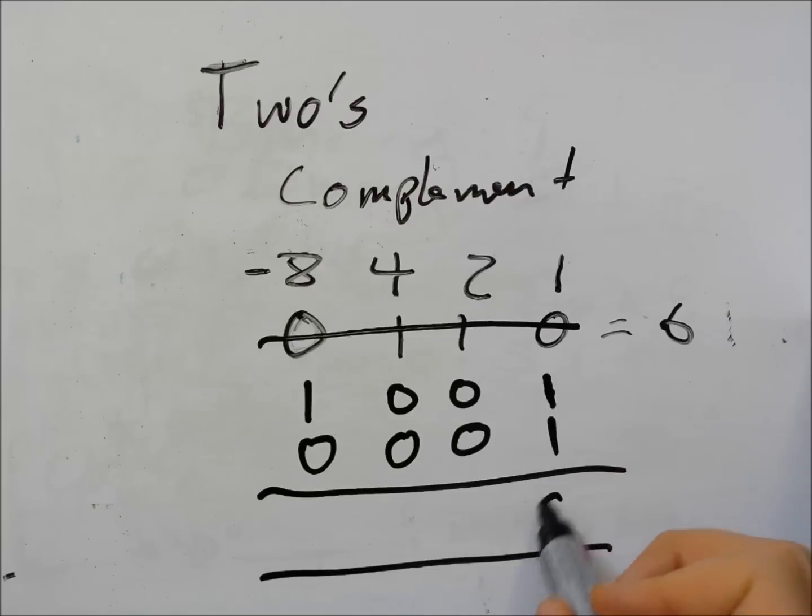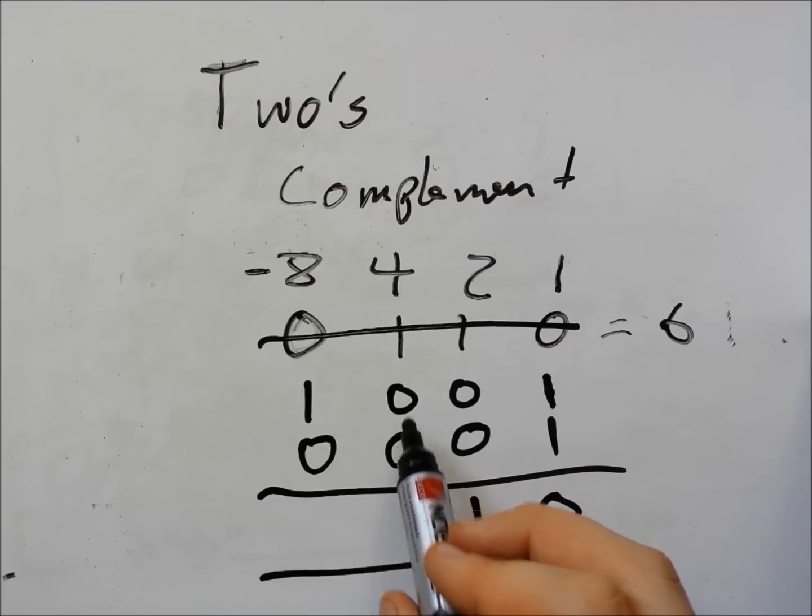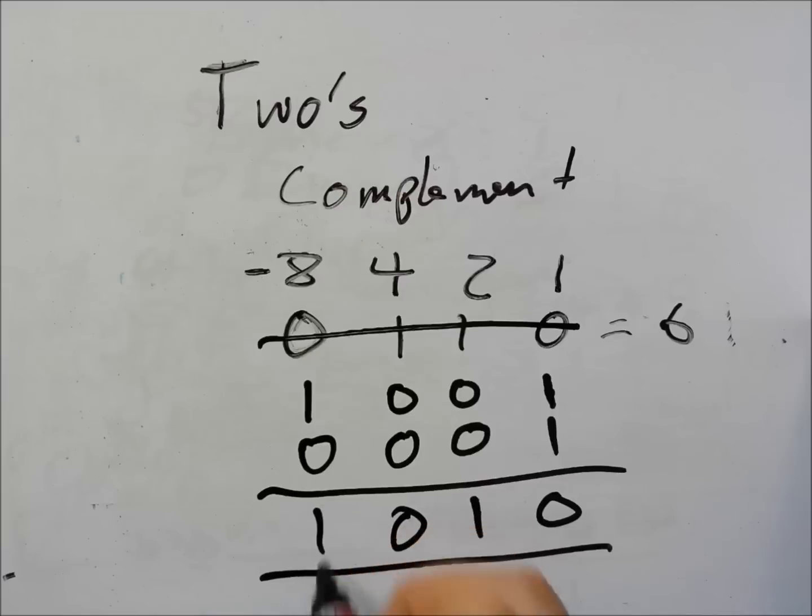So one and one is zero carry one. Zero zero one one zero zero zero one and zero. So we can see minus eight plus two is equal to minus six. Very easy.